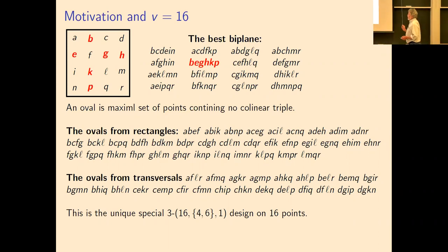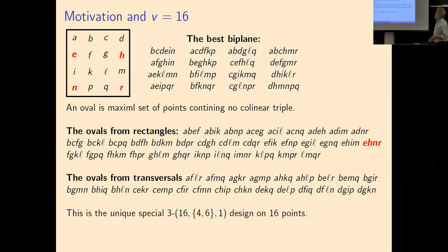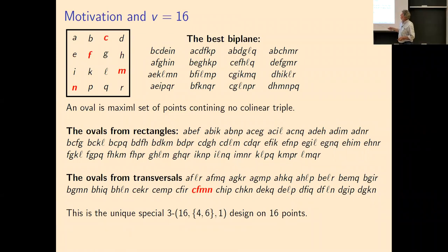You guys probably all know that. But what you might not know is that you can also get all the ovals, all the maximal set of points that contain no collinear triple. You find the maximal set of points that contain no collinear triple. The ovals are the four corners of rectangles. So you take two rows and two columns, that determines a rectangle, and the transversals. So if I take all the ovals together with all the blocks of the biplane, then every triple is contained in exactly one of those. So these are going to contain the three element sets, these guys are going to contain the three element sets that are not collinear, and these contain the ones that are collinear.